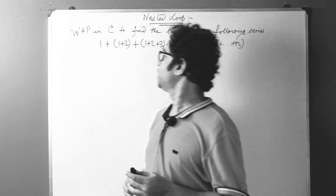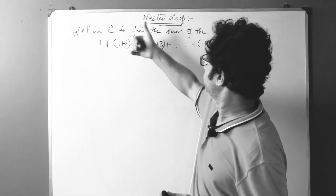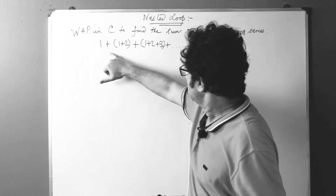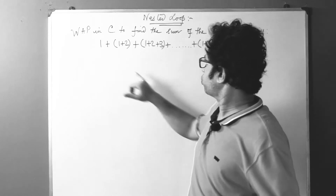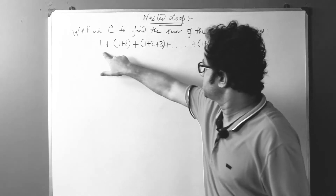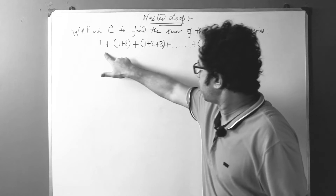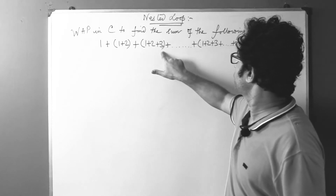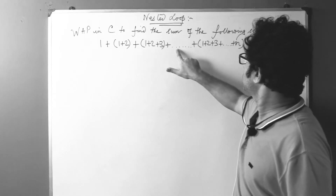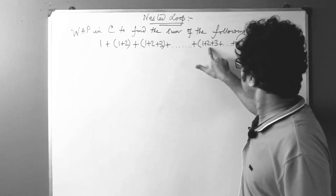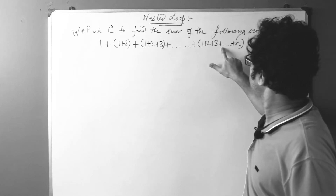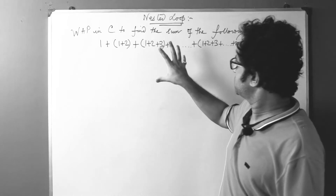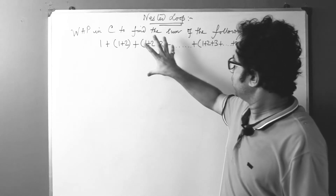Today we are going to calculate the sum of the following series. This series goes like this: 1 plus (1 plus 2) plus (1 plus 2 plus 3) plus dot dot dot plus (1 plus 2 plus 3 plus dot dot dot plus n).